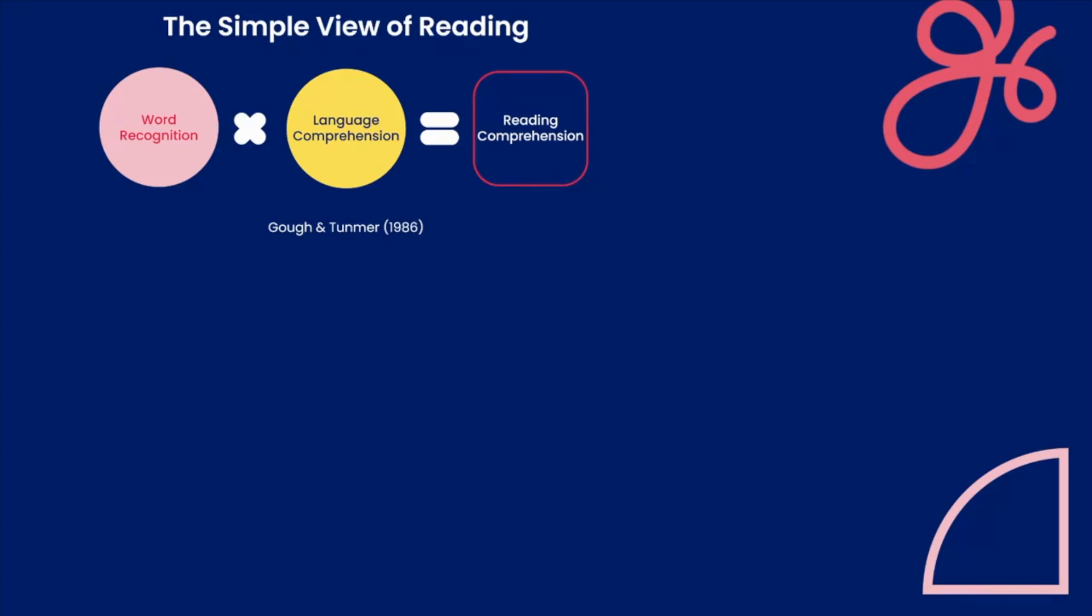Tunmer and Gough's model depicts reading as a product of word recognition multiplied by language comprehension. This mathematical representation allows us to really break down some of the profiles of struggling readers.